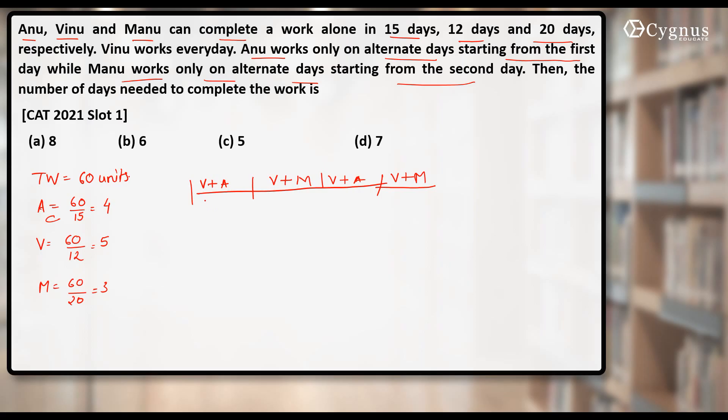Now let's try to find the work done by them. First day Vinu and Anu, they together can do 9 units. Second day Vinu and Manu, they together can do 8 units. Third day again you will have 9, fourth day again you will have 8.